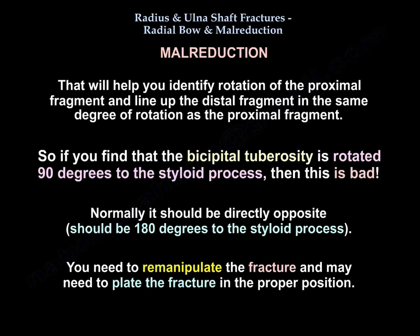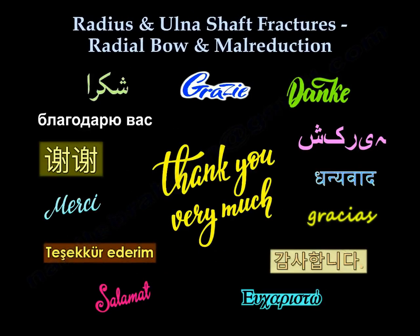This helps you identify the rotation of the proximal fragment and line up the distal fragment to the same degree of rotation. If the bicipital tuberosity is rotated only 90 degrees from the styloid process, that is abnormal — normally it should be directly opposite, at 180 degrees to the radial styloid. In that case, you need to re-manipulate the fracture and plate it in the proper position.